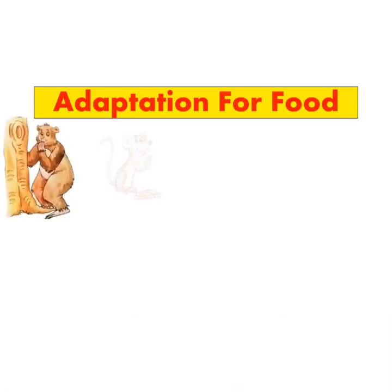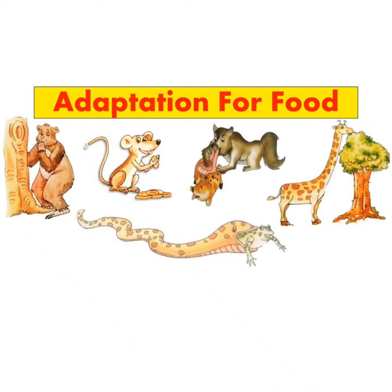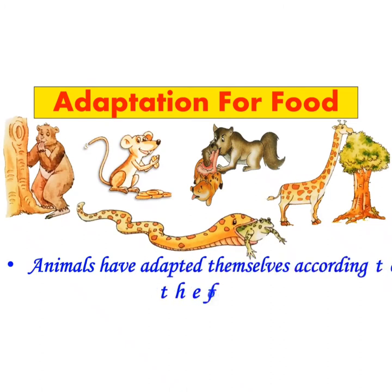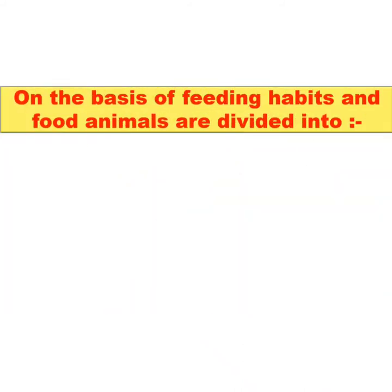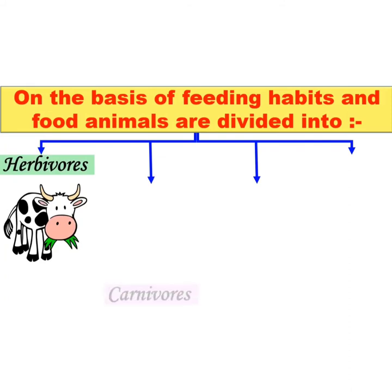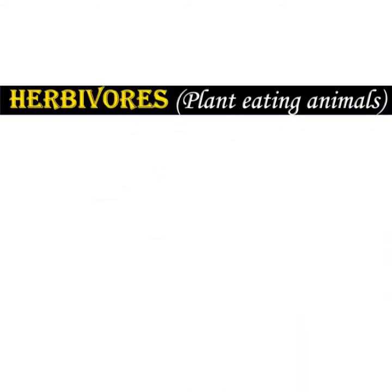Next is adaptation for food. We already know that there is a variety in feeding habits of animals. They have adapted themselves according to the food they eat. On the basis of feeding habits and food, animals are classified into four groups: herbivorous, carnivorous, omnivorous, and parasites. First is herbivorous.